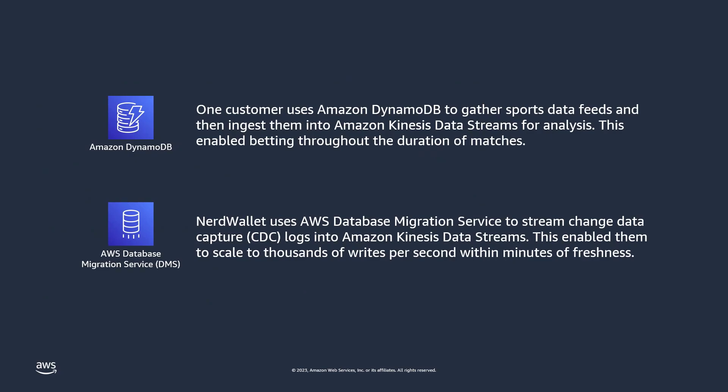Let's look at two examples with AWS services acting as data producers. In the first example, a customer uses Amazon DynamoDB to gather sports data feeds and ingest them into Amazon Kinesis Data Streams for analysis. This enables betting throughout the entire duration of matches. In the second example, NerdWallet uses AWS Database Migration Service to stream change data capture, or CDC, logs into Amazon Kinesis Data Streams, enabling them to scale to thousands of writes per second within minutes of freshness of data. These examples highlight the ease and potential power of Amazon Service Integrations.